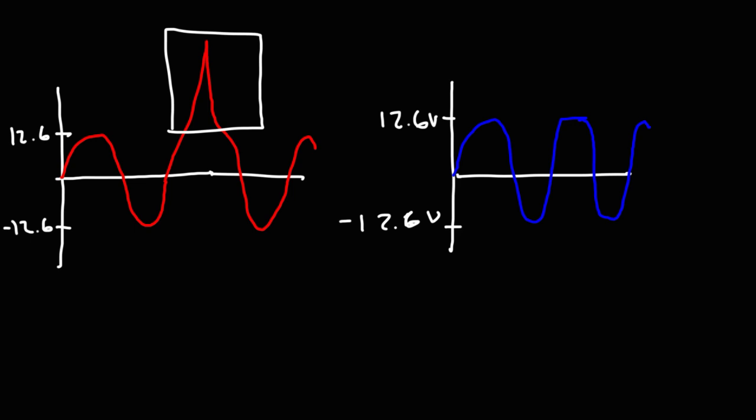It protects the circuit from high voltages, and the fuse protects the device from high currents. So now you know how to create a high voltage surge protection circuit. All you need is a fuse and two Zener diodes.